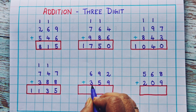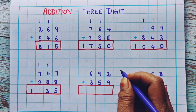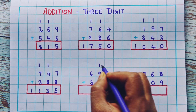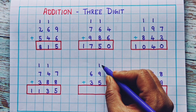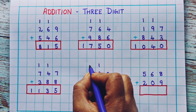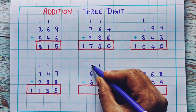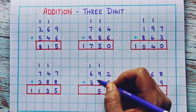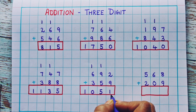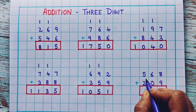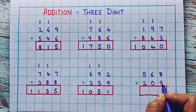Now let's see the next one: 692 plus 359. 2 plus 9 is 11, so I'll write 1 as a carryover and 1 at the bottom. Now 1 plus 9 is 10, 10 plus 5 is 15. Now 6 plus 1 is 7, 7 plus 3 is 10, so the answer is 1051.